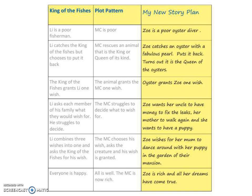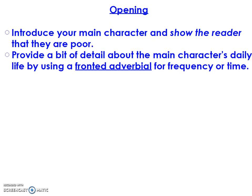Now let's start thinking about how we can actually turn this plan into an actual story. I've started with my opening, using my boxed-up planner, and looking back at the model text if I need to. In this very first section — the opening — I want to introduce my main character and show the reader that they are poor, then provide a little bit of detail about the character's daily life by using a fronted adverbial, which could be about frequency or time.